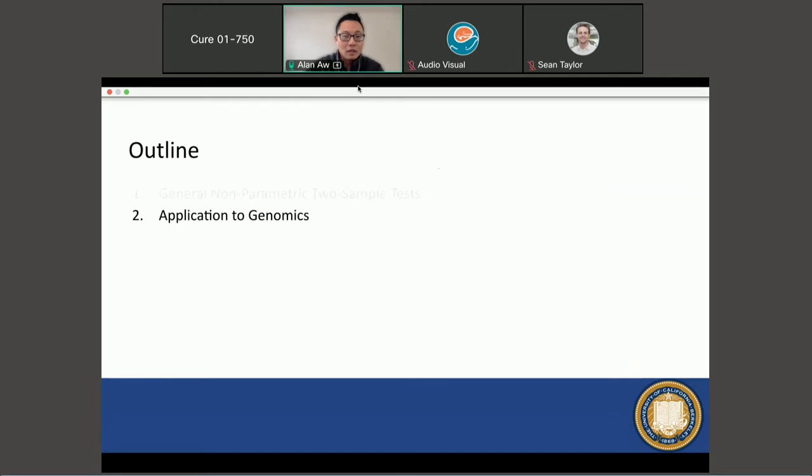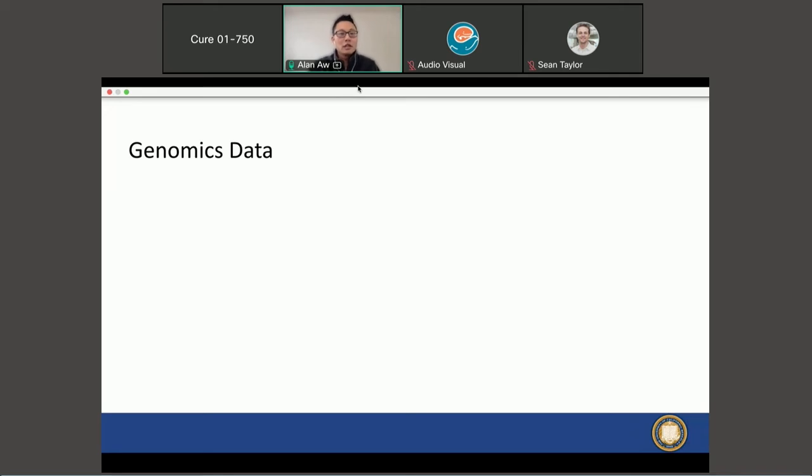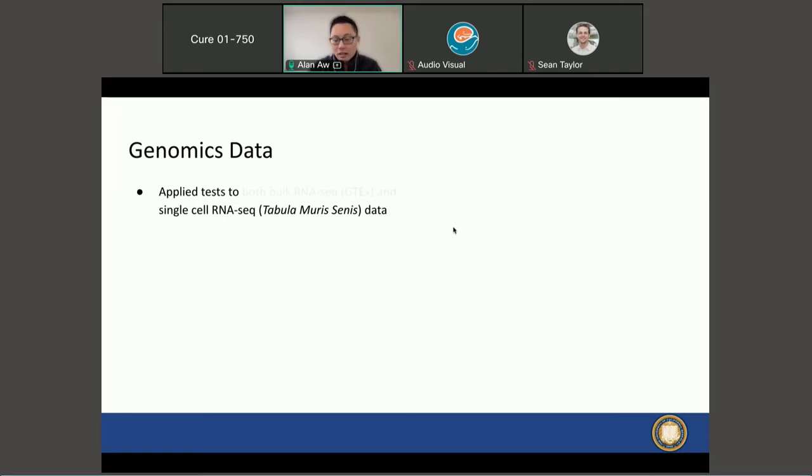Now I'm going to talk about some applications to genomics, and I'm going to keep it short so that we have some time for questions. We ran this test on both bulk RNA-seq as well as single cell RNA-seq. I'll be talking about the single cell RNA-seq application today. We ran it on the Tabula Muris data where the condition of interest is the age group.